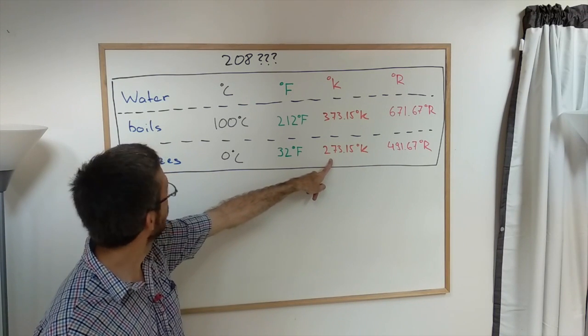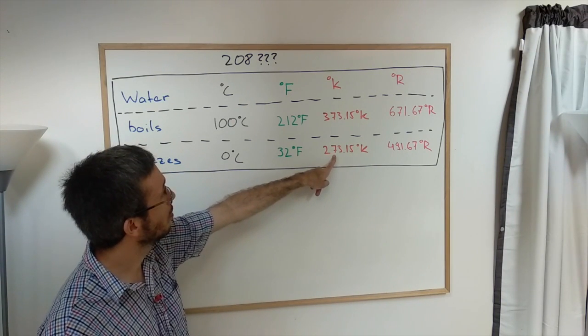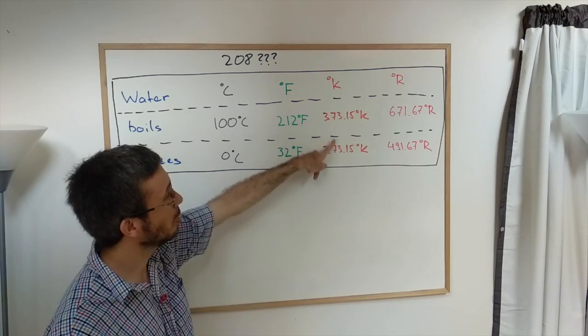Kelvin: freezing is at 273, boiling at 373. The water was not frozen, so Kelvin is out.